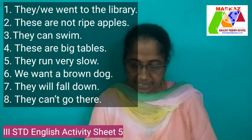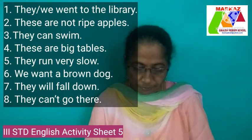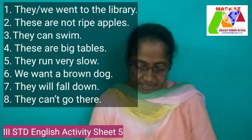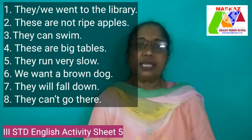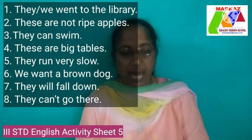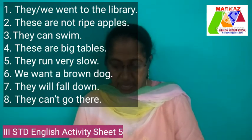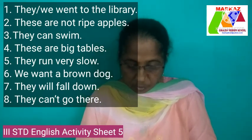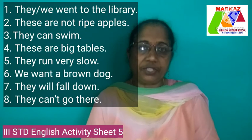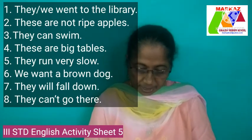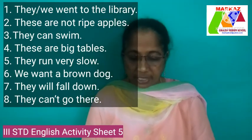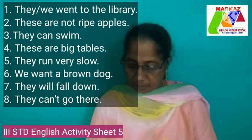Three: 'He can swim' becomes 'They can swim.' Four: 'It is a big table' becomes 'These or those are big tables.' Five: 'She runs very slow' becomes 'They run very slow.' Six: 'I want a brown dog' becomes 'We want a brown dog' or 'We want brown dogs' — both are correct. Seven: 'She will fall down' becomes 'They will fall down.' Eight: 'He can't go there' becomes 'They can't go there.' Your homework is to listen to my video and complete the exercise on page 65 in your textbook. Thank you.